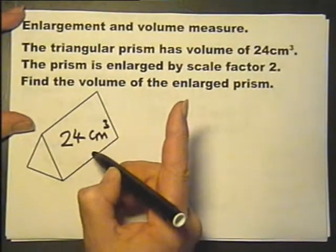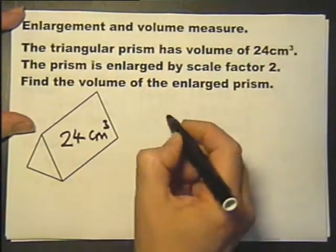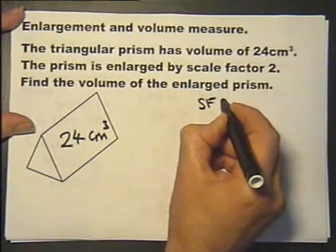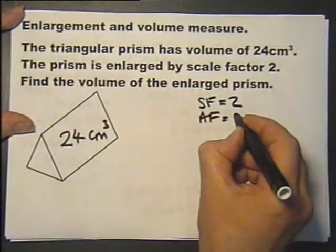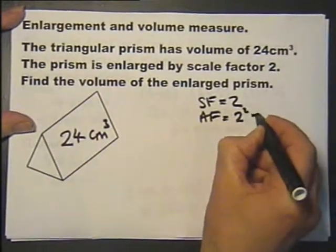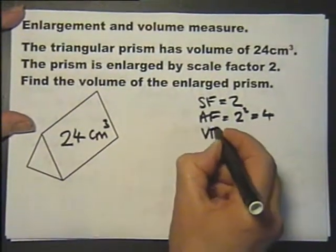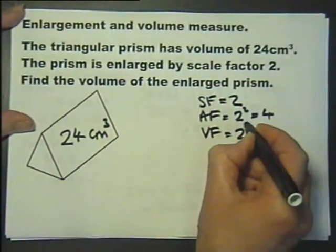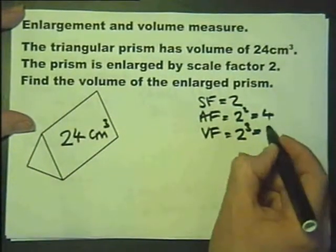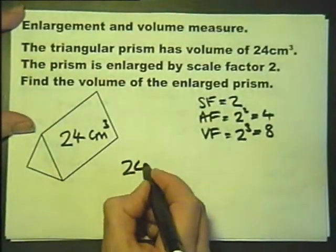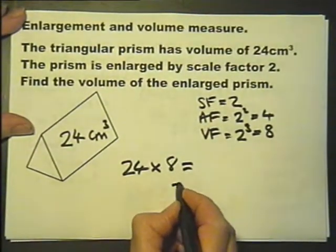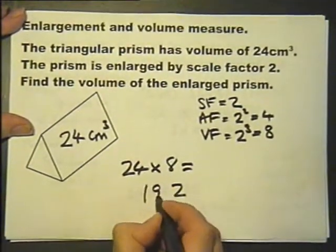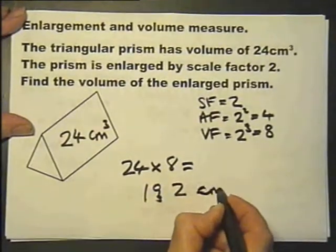So we'll have to do this one using method 2. If it's enlarged by scale factor 2, any volumes we can multiply by the volume factor. So the answer is 8 times 24, 192 cubic centimetres.